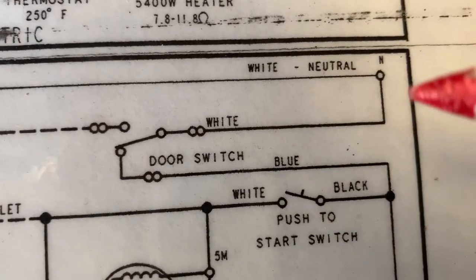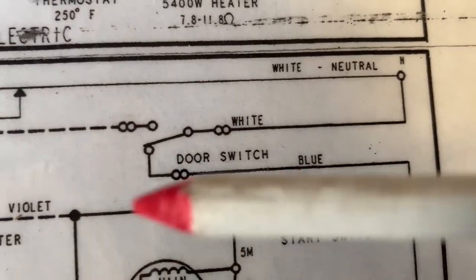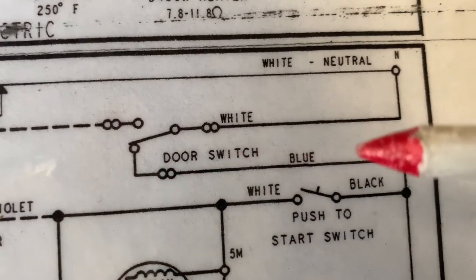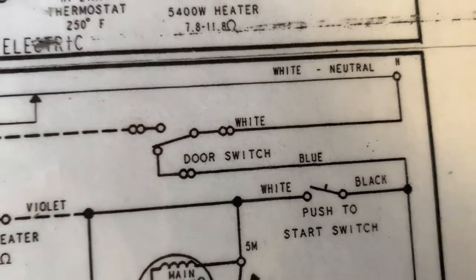Notice we have the incoming line from neutral is white, and if the dryer is operating, the line going out is blue. Let's see what that looks like on the machine.